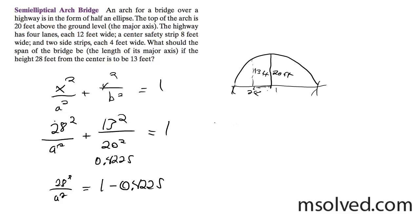We get a squared times 0.5775 is equal to 28 squared. And then 28 squared divided by that is equal to 1,357.57.